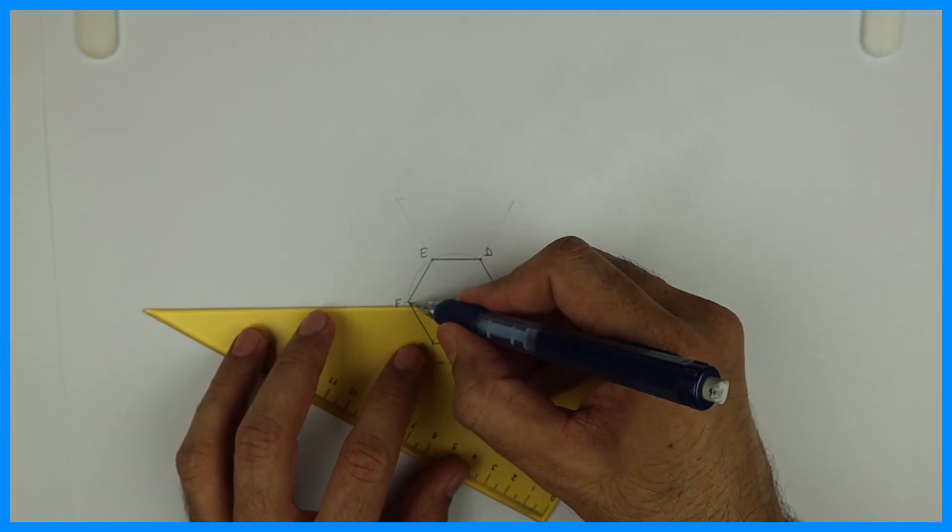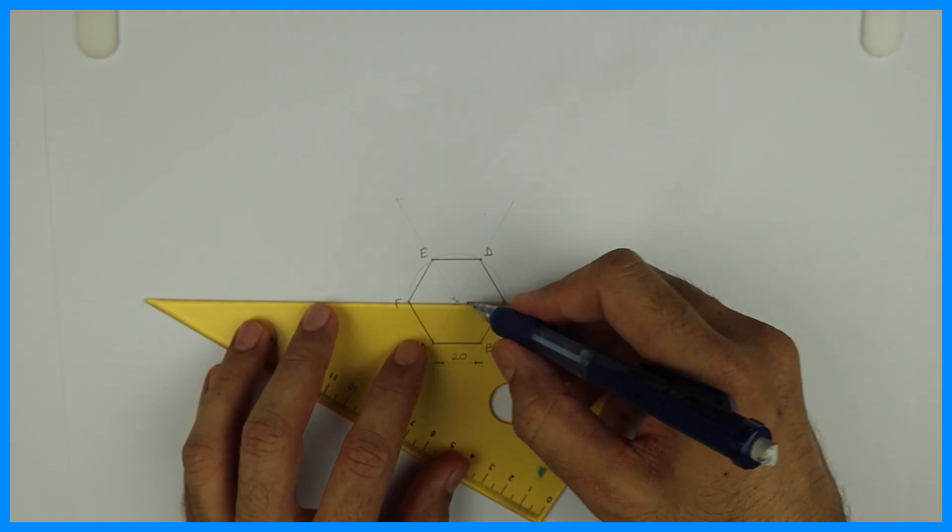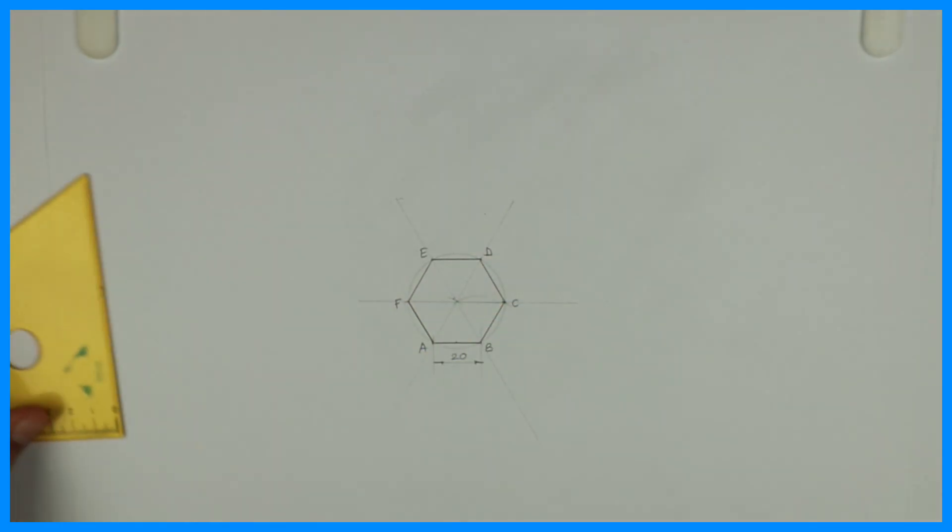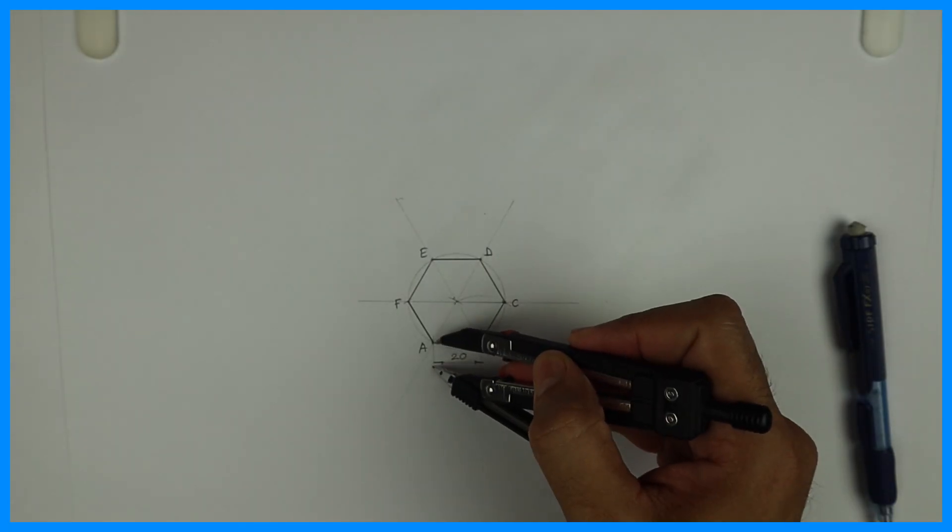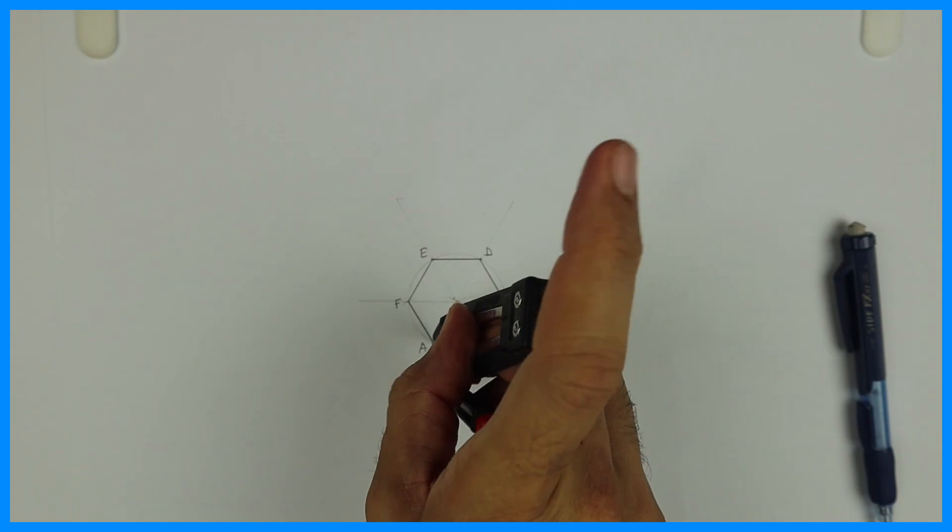Extend all these lines. Now we need to bisect this external angle.